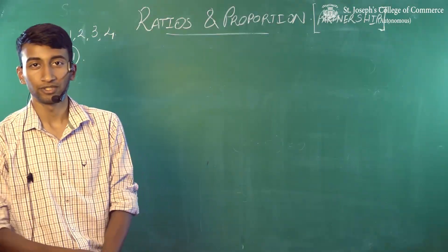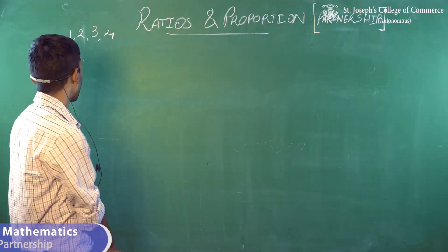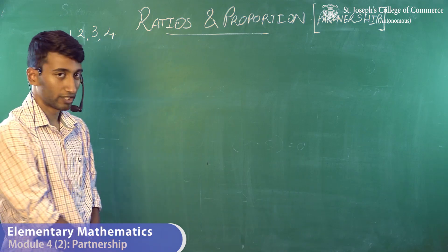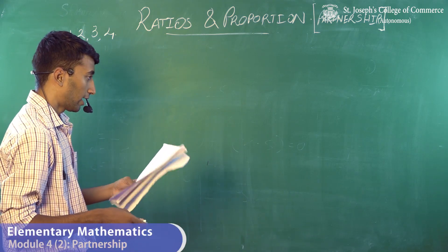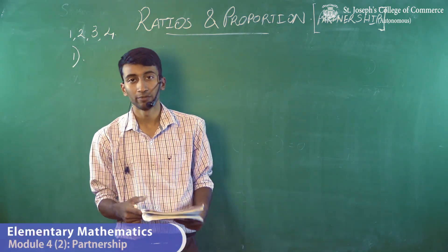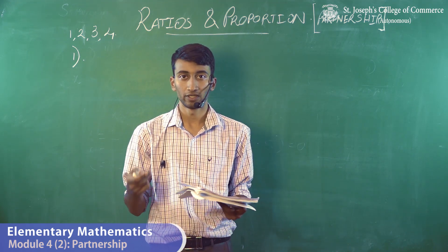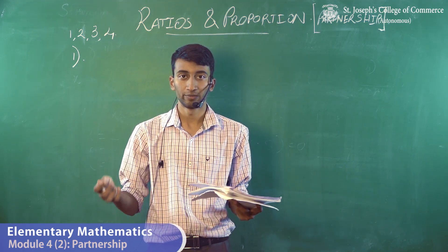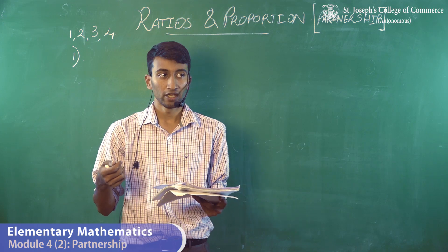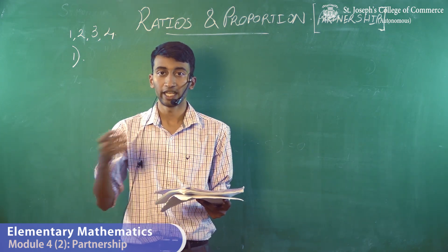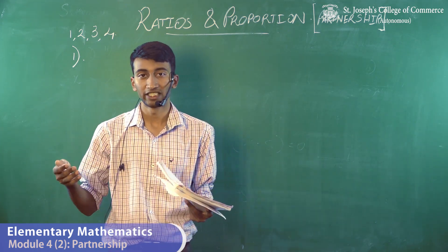We've come to the last part of ratios and proportions, that is partnership. We're going to do the first, second, third, and fourth sums under partnership. In partnership, people do not invest the same amount as each other, so we cannot give equal returns to each person — we have to give returns in proportion to how much they have invested in the company.